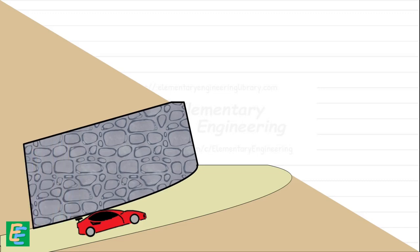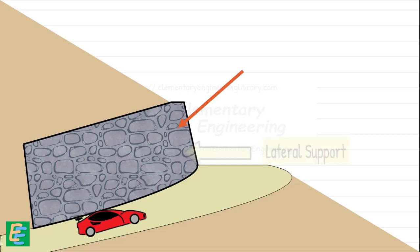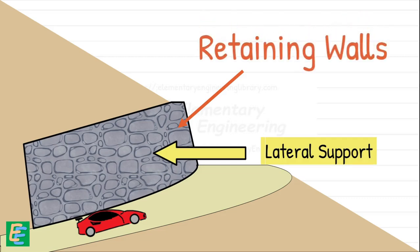So, when the soil needs to be held back at a steep angle, we create these wall structures designed to provide the lateral support necessary to keep the earth from moving. These structures are called retaining walls.